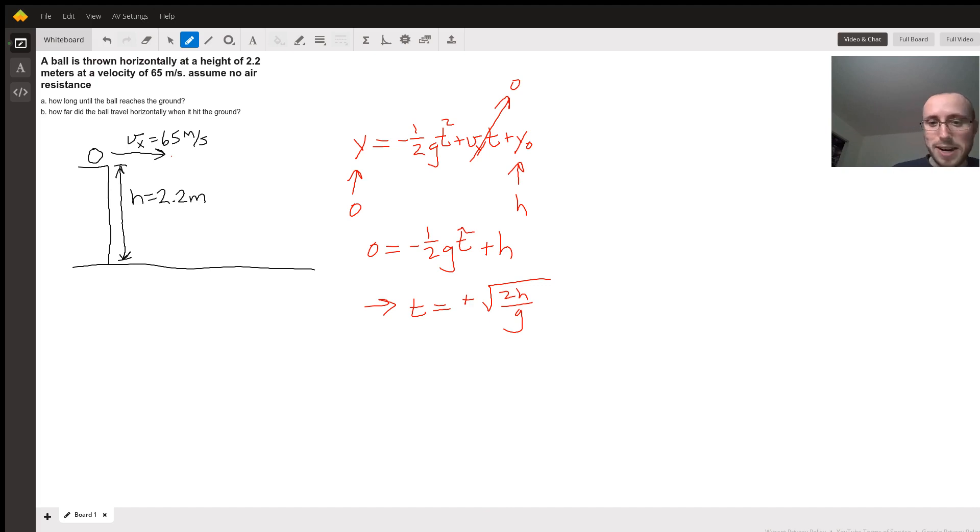As for the second part, part B, how far does the ball travel? Well, for the horizontal direction, there's no forces acting on it. So the distance that you travel in the x direction is going to be x equals whatever your velocity is in the x direction multiplied by the time. And that's it.